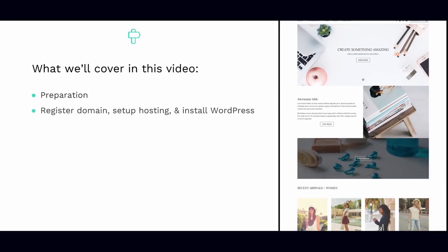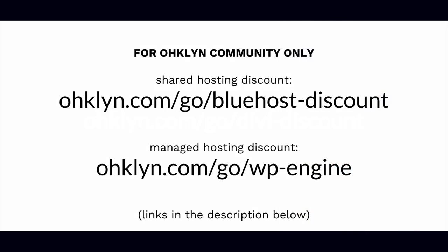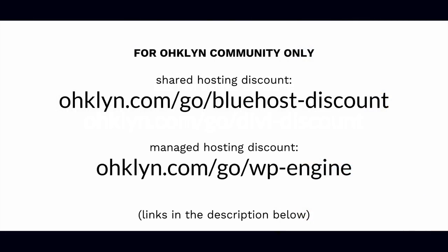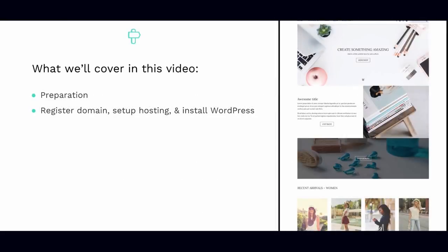We'll then move on to registering your domain and setting up hosting for your online store, as well as installing WordPress on your domain. We'll provide two hosting options with discount links in the description. The first is a shared hosting option with Bluehost, which is around $4–$10 per month depending on the hosting term, and comes with a free domain name. If you want to accept credit card payments directly on your site and not redirect to PayPal, you'll need an SSL certificate as well. The other option is with WP Engine, a managed hosting option that includes site backups, a free SSL certificate, and improved page load speed, at $20–$30 per month with a significant discount via our link.